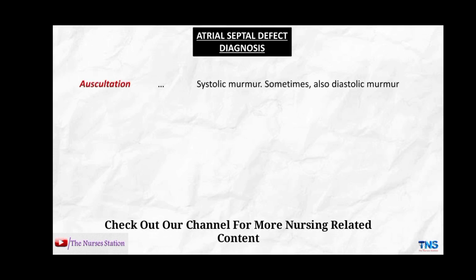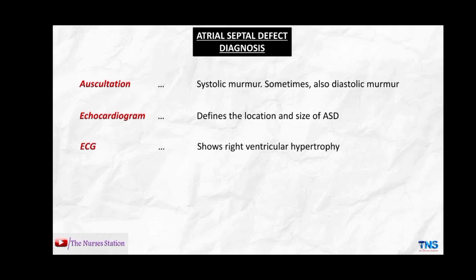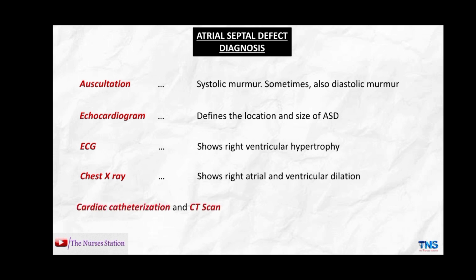Diagnostic evaluation includes auscultation, which reveals a characteristic systolic murmur and sometimes a diastolic murmur. Echocardiogram shows the location and size of the atrial septal defect. ECG shows right ventricular hypertrophy. Chest X-ray shows right atrial and ventricular dilation or cardiac enlargement. Cardiac catheterization and CT scan can also be used to locate the ASD.